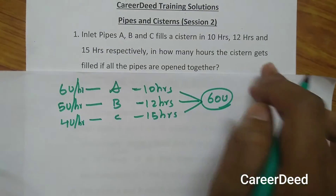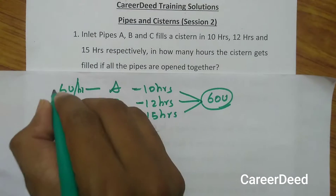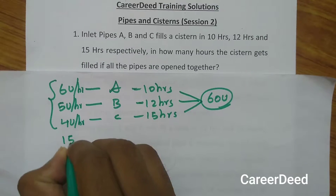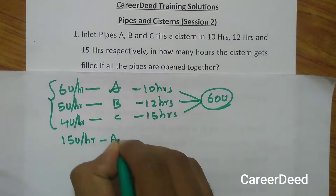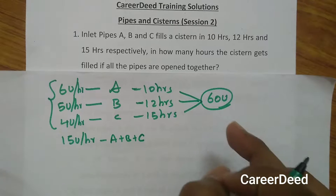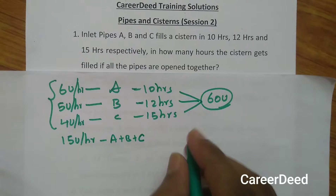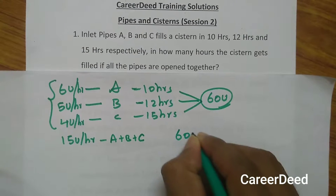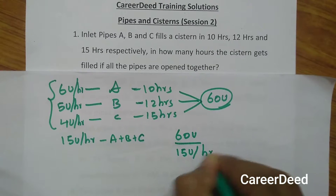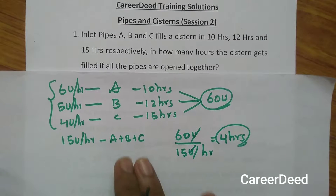The question is: in how many hours does the cistern get filled if all the pipes are open together? If all the pipes are open together, they will fill 6 + 5 + 4 = 15 units per hour. So 15 units per hour is the combined efficiency of pipes A, B and C. The total capacity is 60 units, so 60 ÷ 15 = 4 hours. In 4 hours pipes A, B and C together will fill the cistern.